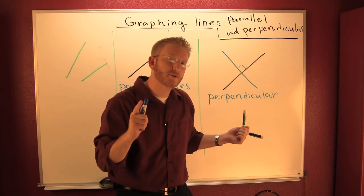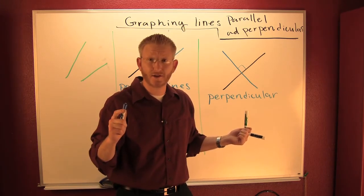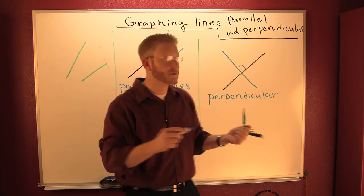So what you're going to remember is perpendicular lines have negative reciprocal slopes. Perpendicular lines have negative reciprocal slopes.